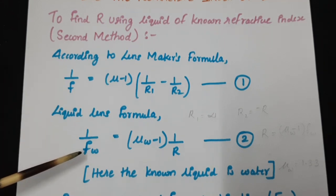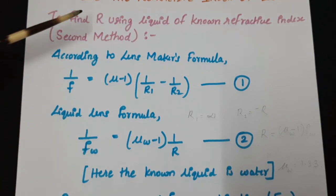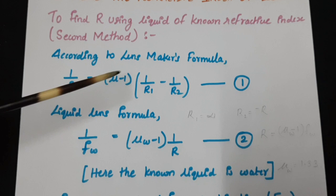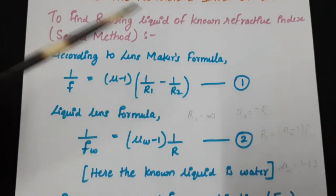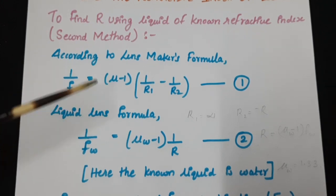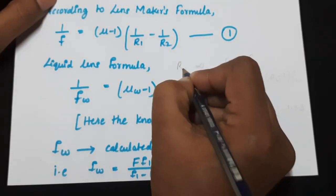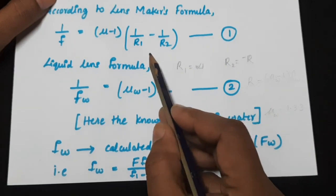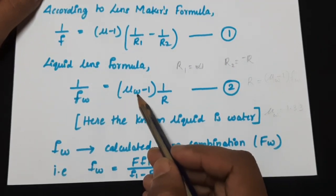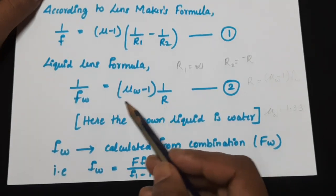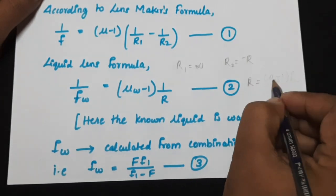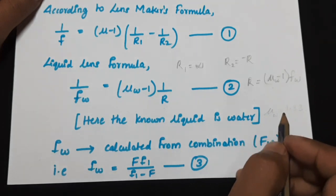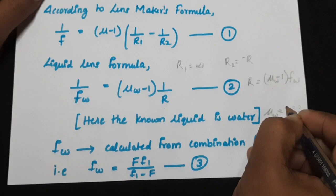Now that we have evaluated the focal length of this water lens, let us concentrate on the theory to find out the radius of curvature R using the second method. Starting from the lens maker's formula: 1/f = (μ - 1)(1/R1 - 1/R2). When we come to this liquid lens, R1 equals infinity and R2 equals minus R. So applying this, 1/fw = (μ - 1)(1/R), or on rearranging, R = (μw - 1)·fw, where μw is the refractive index of water equal to 1.33.